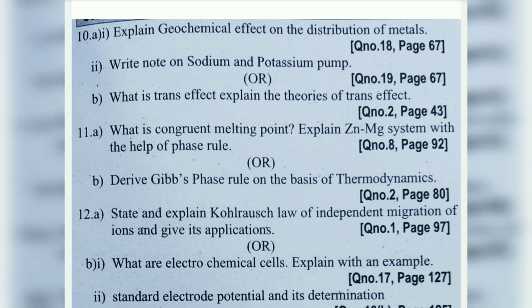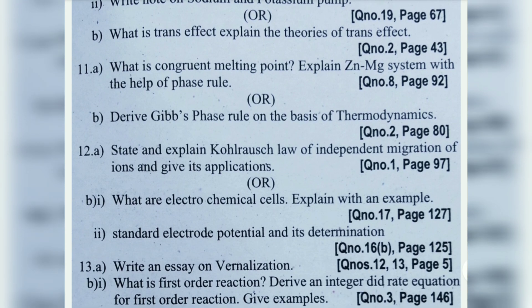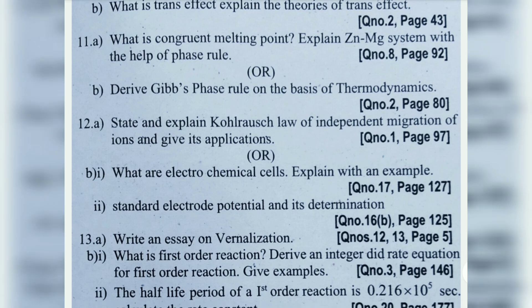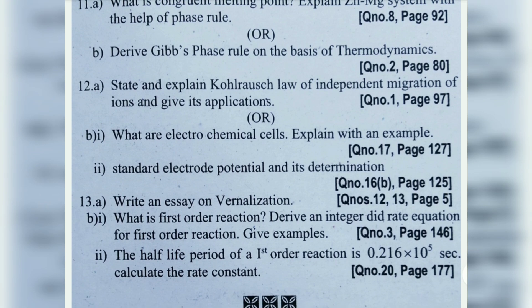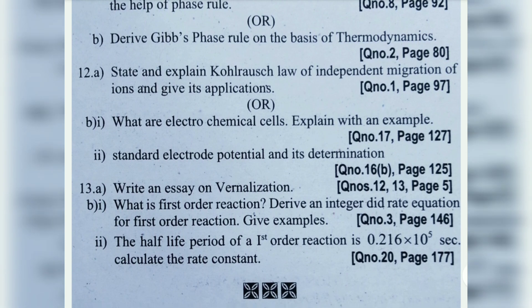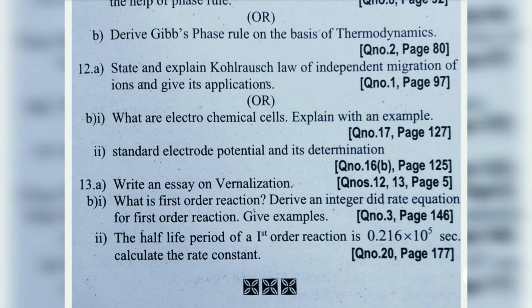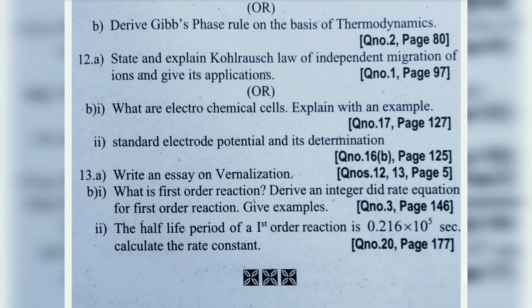12th (a): State and explain Kohlrausch's law of independent migration of ions. 12th (b) first one: What are electrochemical cells? 12th (b) second one: Standard electrode potential. 13th (b): Vernalization — this is a short that appeared in Paper 1 as well. 13th (b) first one: What is first order reaction?